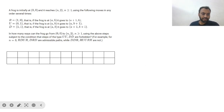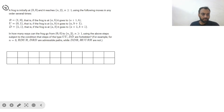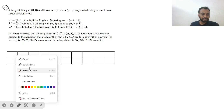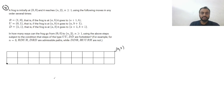Hi guys, let's see question number 4 of RMO 2025. This is based on combinatorics. We have a frog which is initially at (0, 0) and it reaches (n, 2), where n is greater than or equal to 1, using the following moves in order several times.